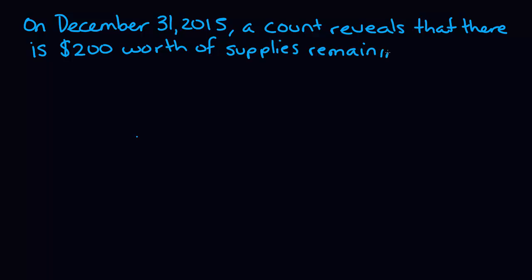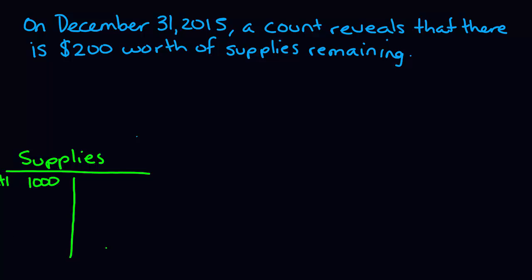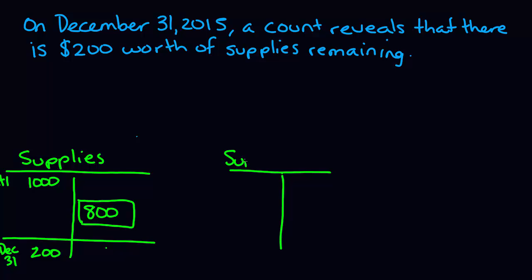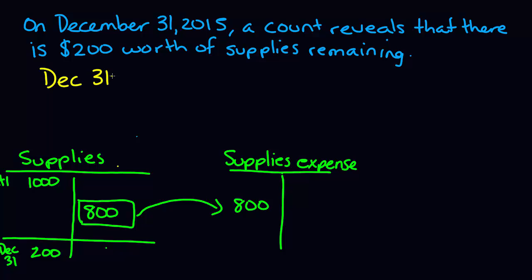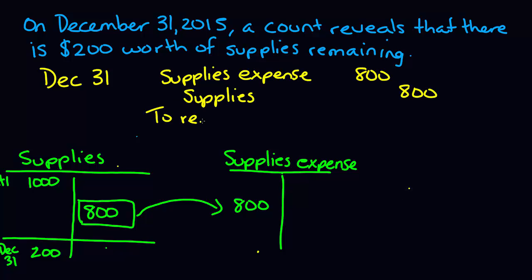So we set up our T-account for the supplies account. On October 1st when we purchased these, we had $1,000 in our supplies account. At year end, December 31st, we know there is $200 left. We had $1,000 and we're left with $200 — what adjustment do we need to bring $1,000 down to $200? We need to take away $800 worth of supplies, and that is going to be our adjustment. This $800 of supplies goes to supplies expense because the supplies are used up and no longer have a future benefit to us. Our journal entry: supplies expense debit for $800 and supplies credit, the asset, for $800.